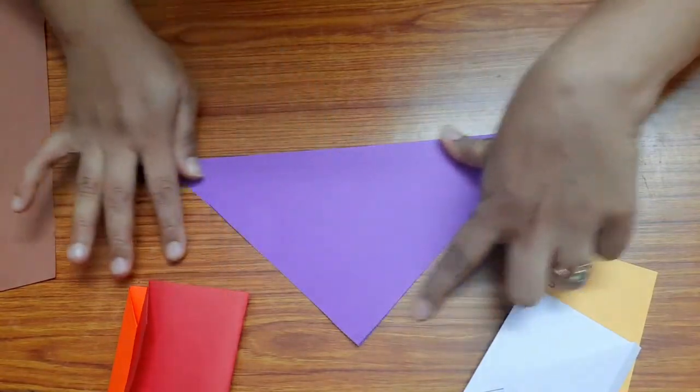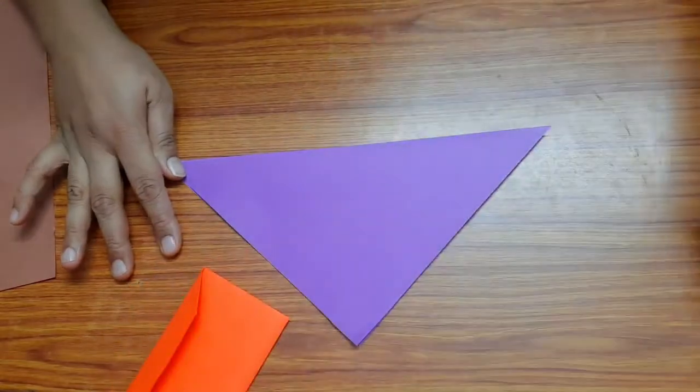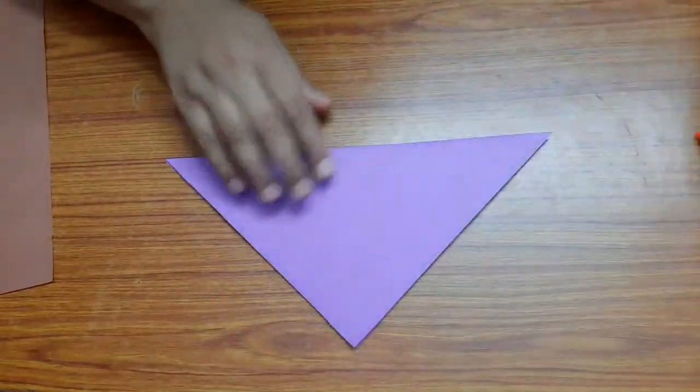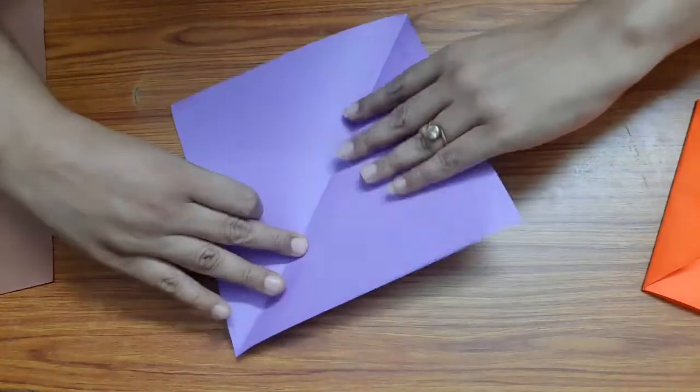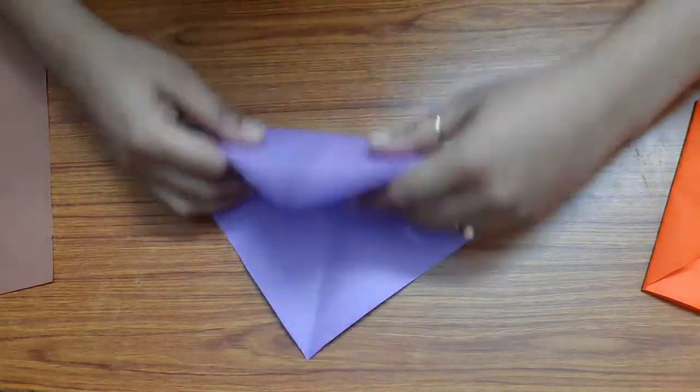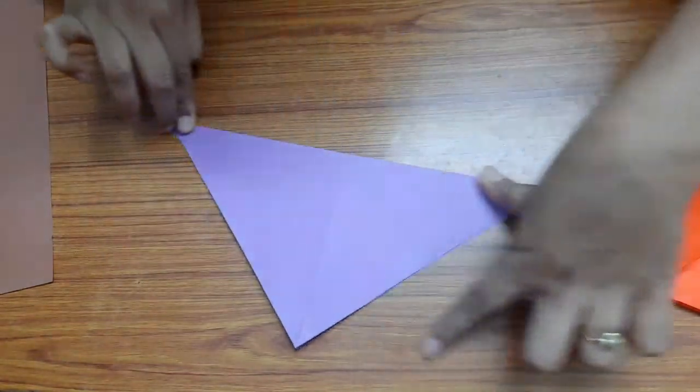In a triangle, then open it. Fold the other two corners from the right, then like this.